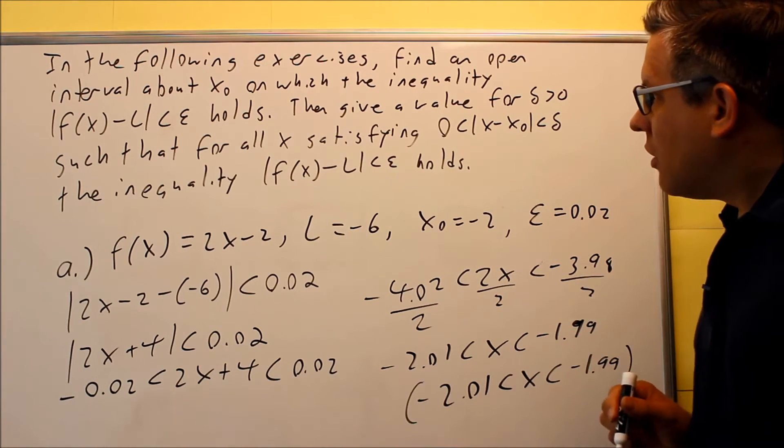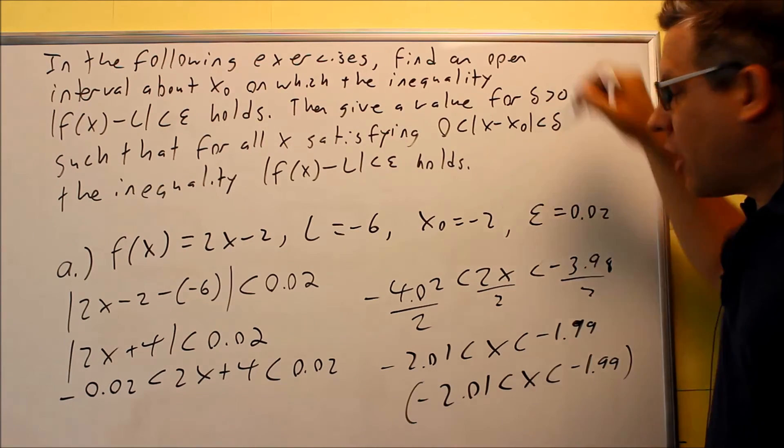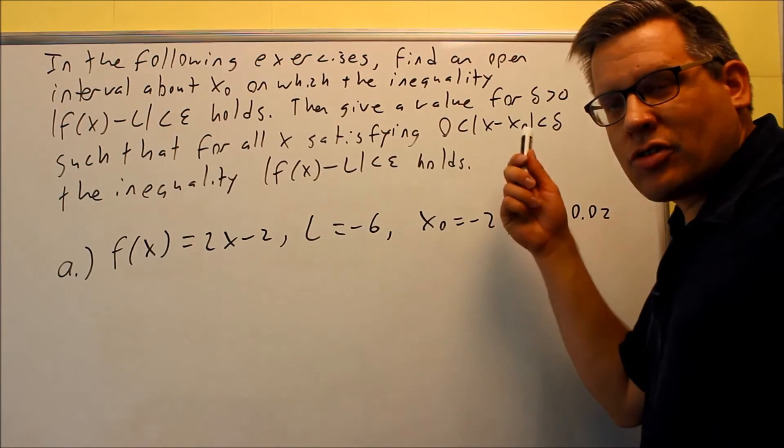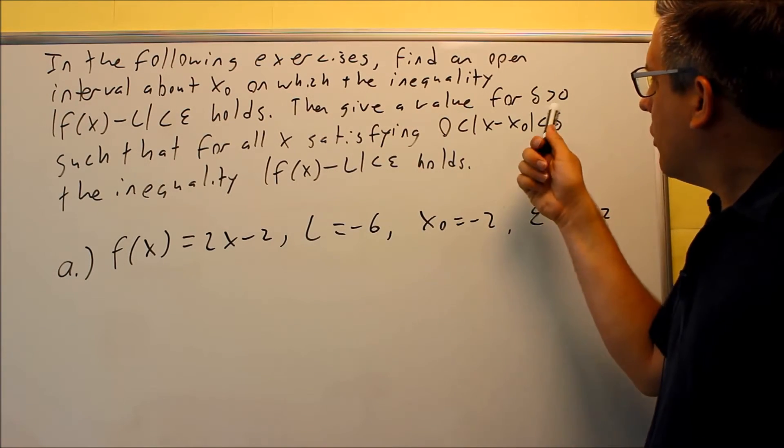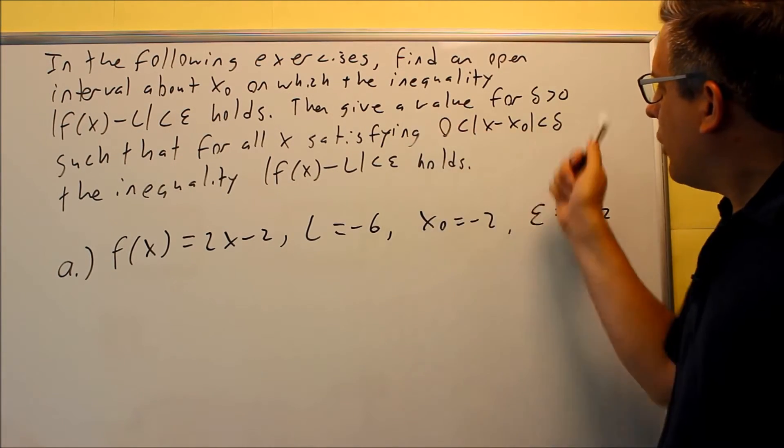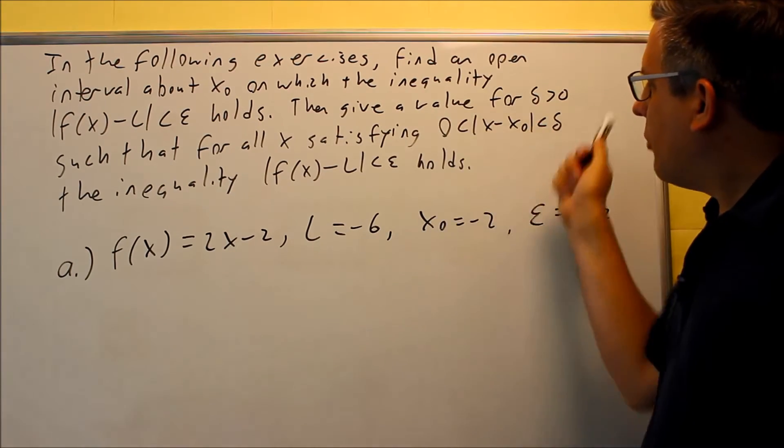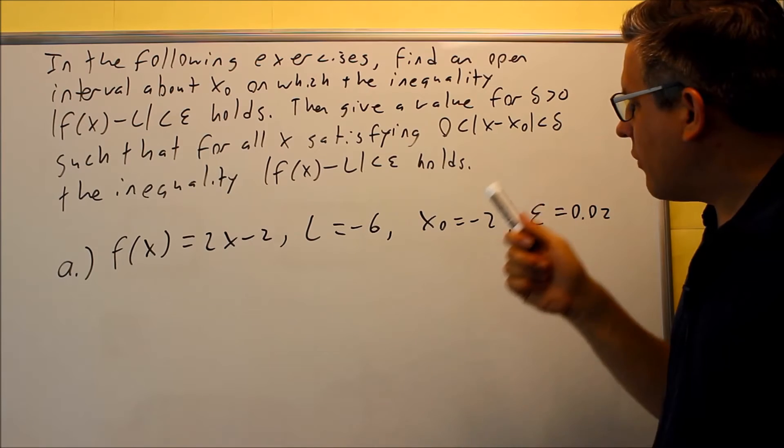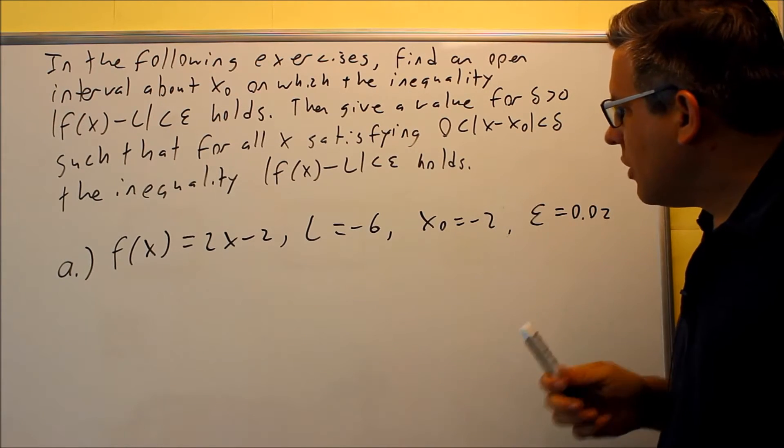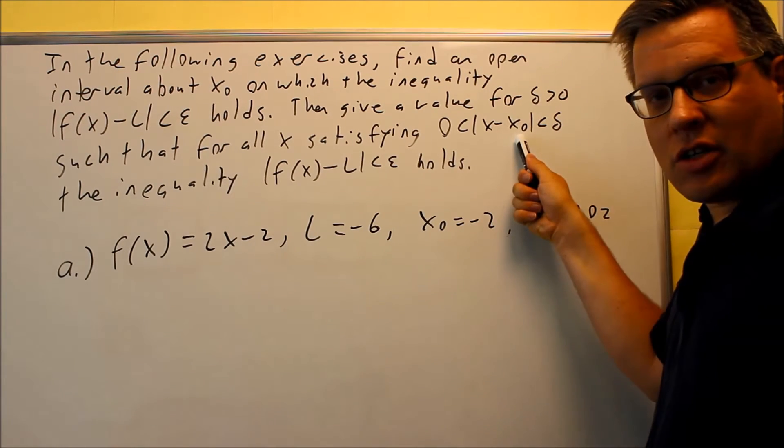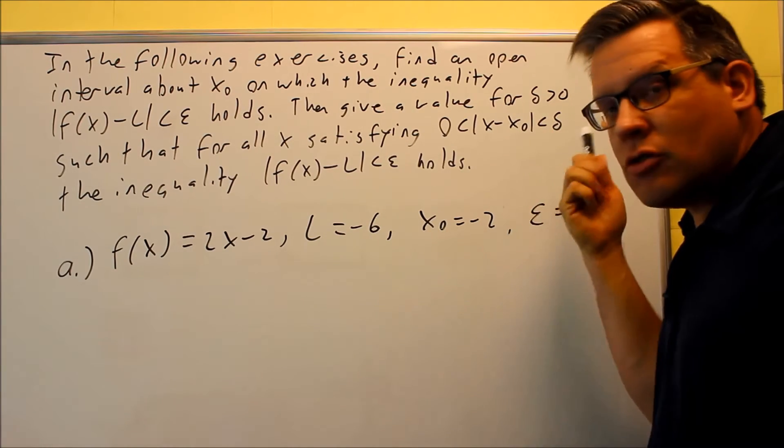So now that we're done with this part, let's take a look at the second part where we've got to look for the delta. Okay, for the second part, we want to give the delta here, and we have to satisfy this particular inequality. So we have information to plug in for this. We have the x of 0, it's negative 2. So if you put negative 2 into here, you get x minus negative 2, which is going to be plus.